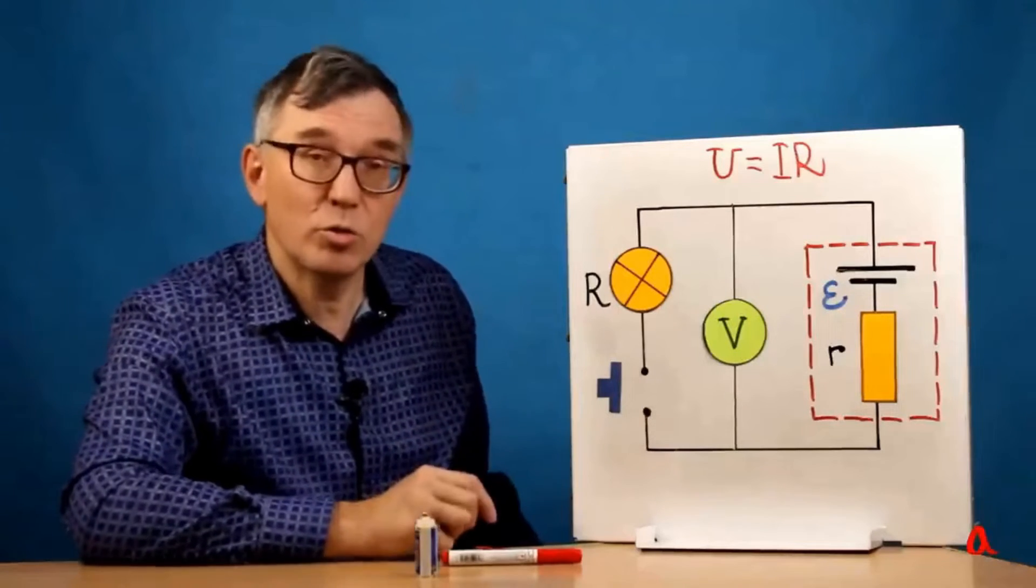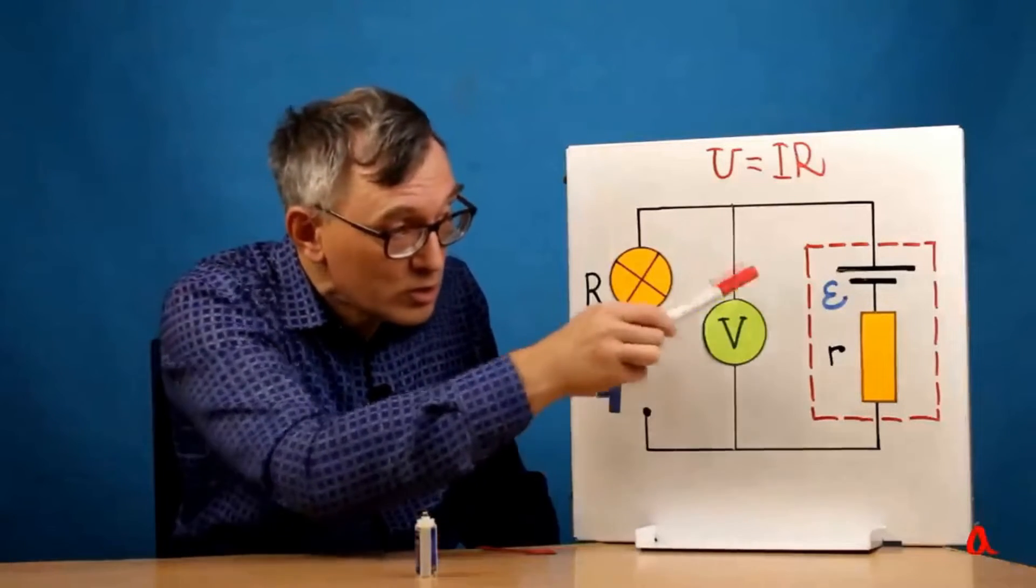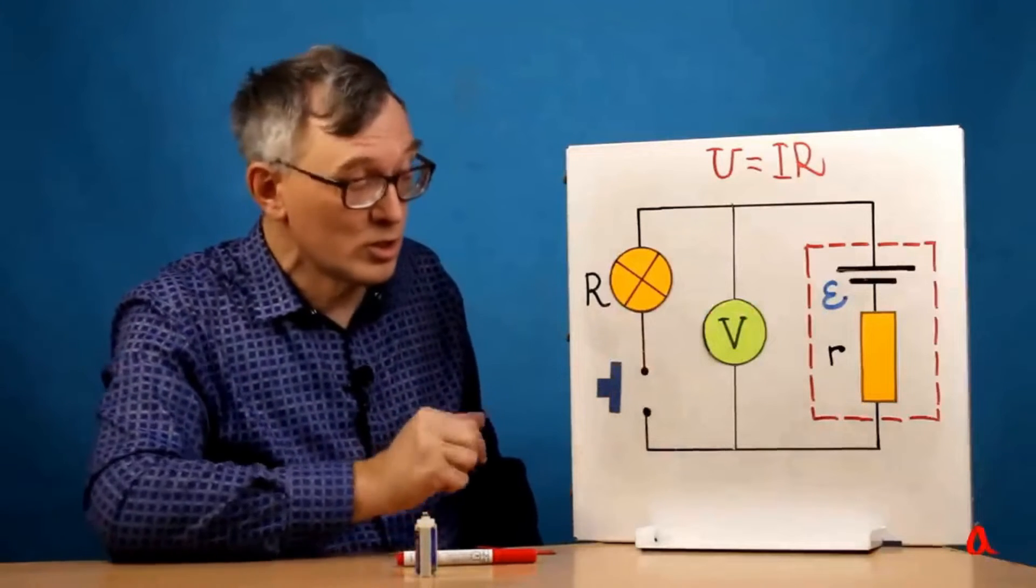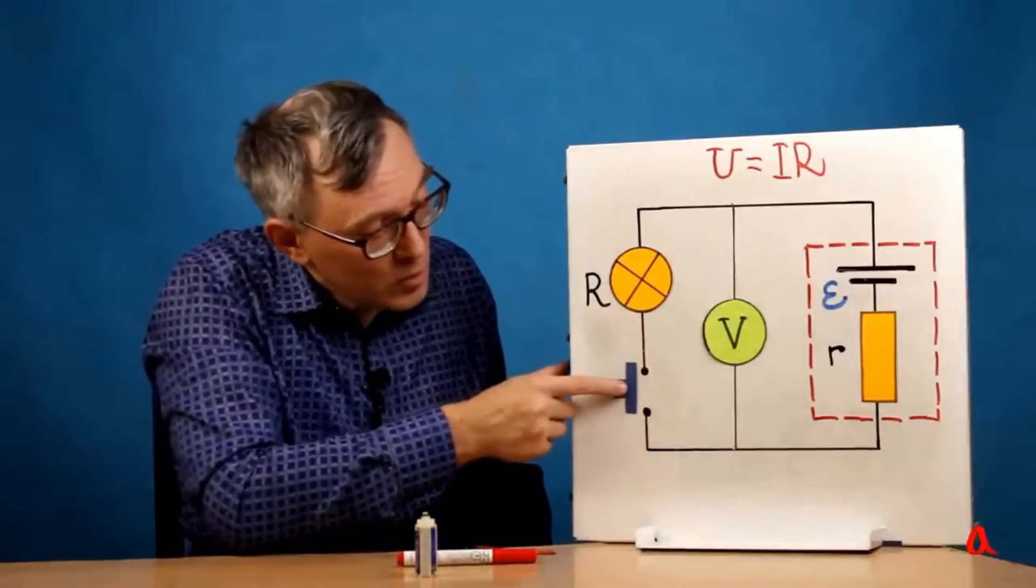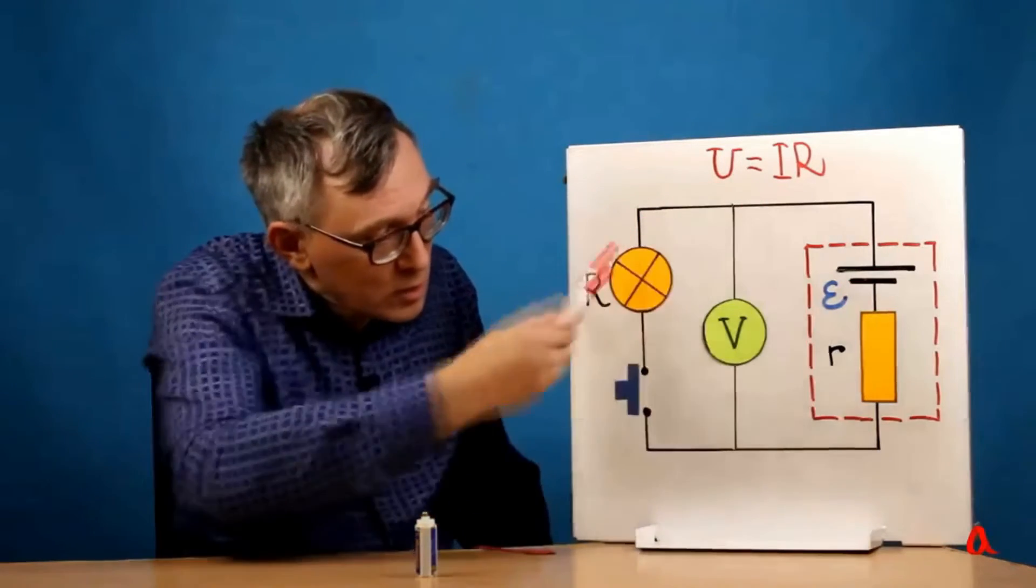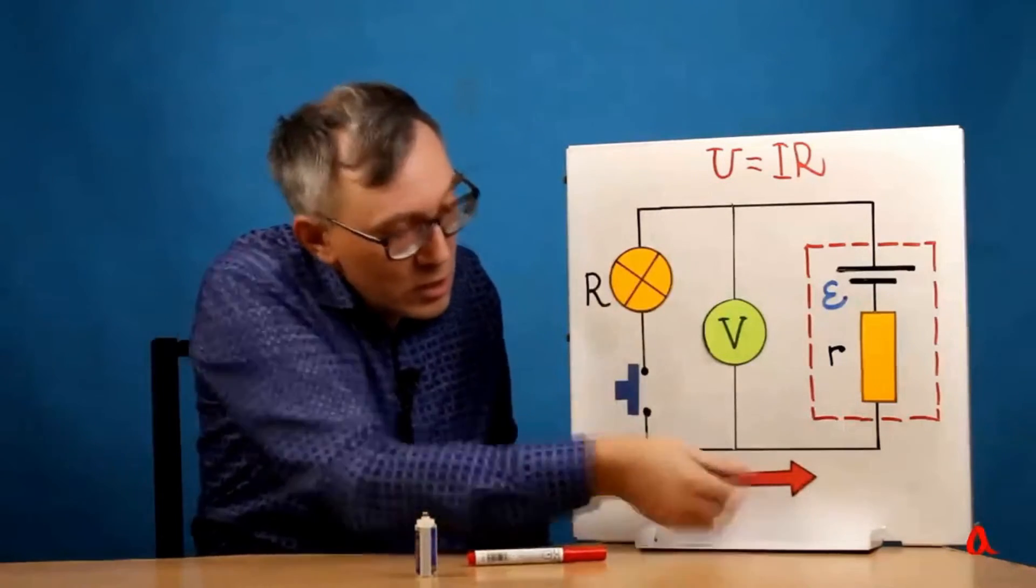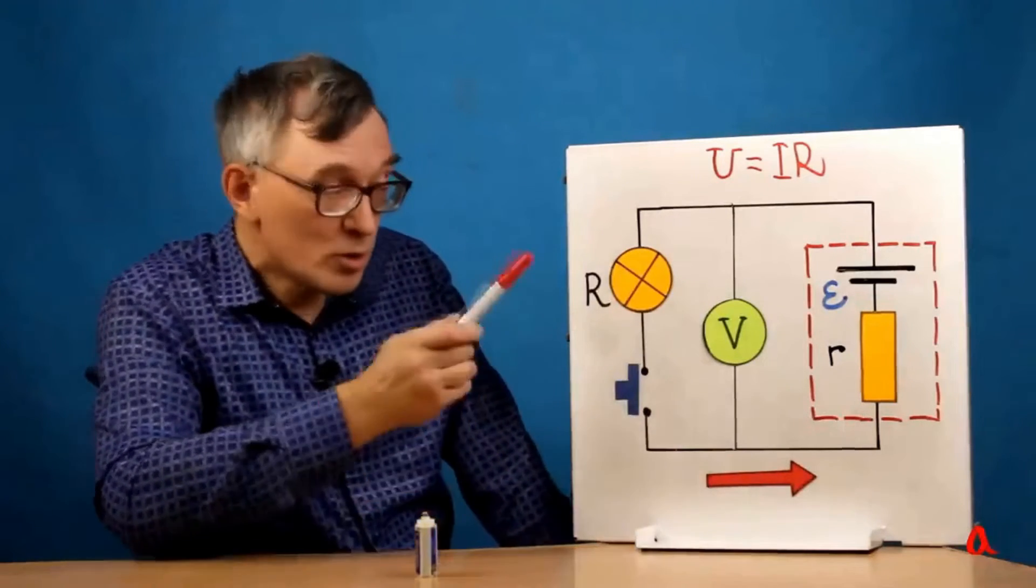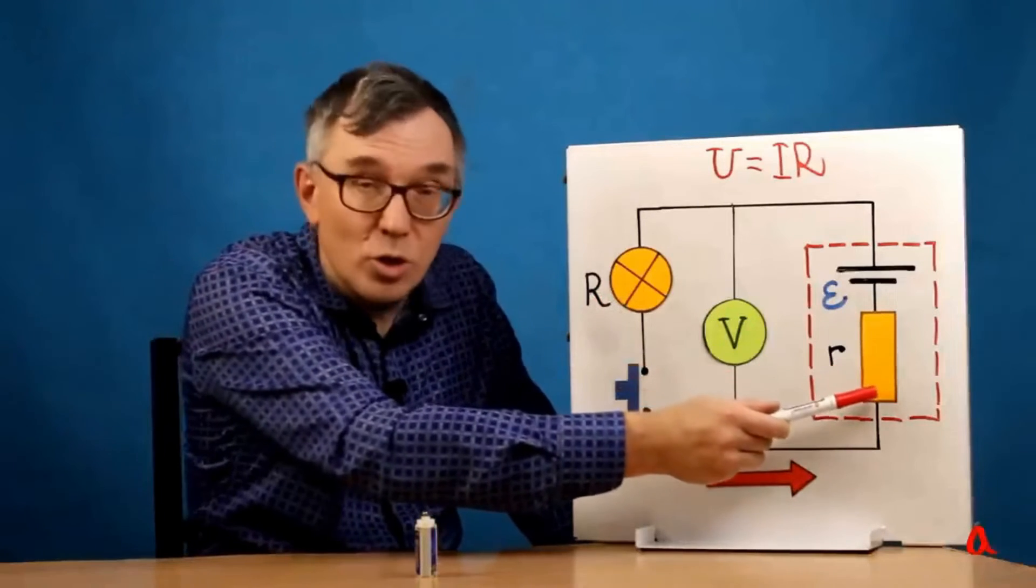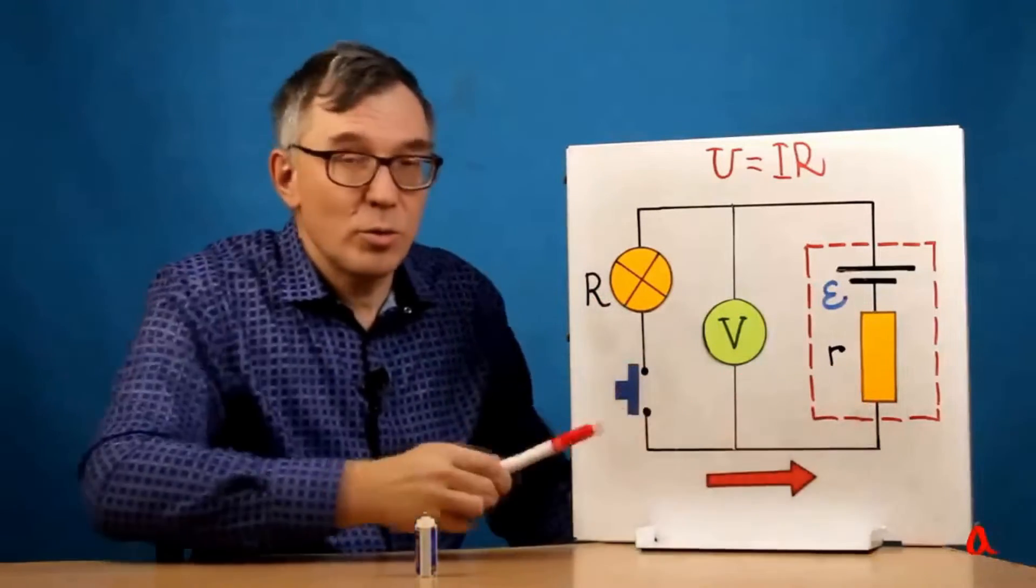When circuit is open voltmeter shows battery's electromotive force, in our experiment 4.5V. And when circuit is closed an electric current passes through it. At this juncture the voltage experiences a partial decrease across the bulb and a partial decrease across the internal resistance, resulting in a division of the voltage drop.